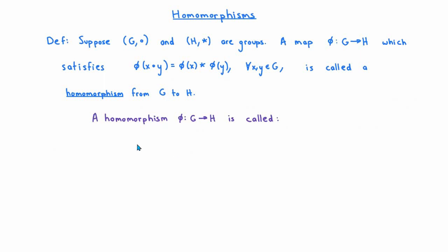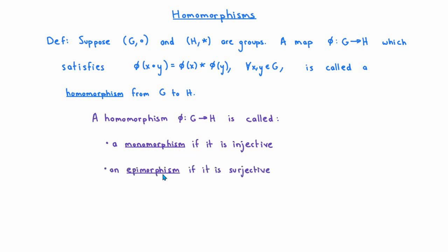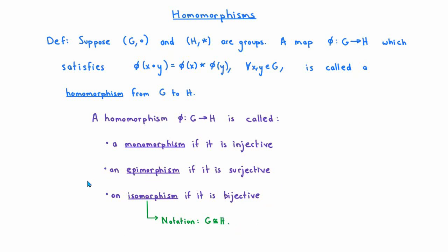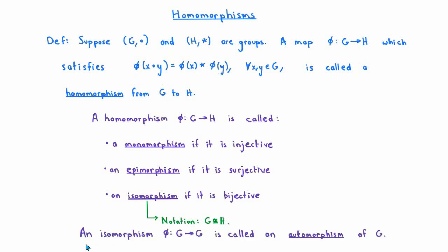There are a bunch of extra properties that a homomorphism phi from G to H may or may not satisfy. First, if phi is a homomorphism which is injective, then we may also call it a monomorphism. If phi is surjective, then we may call it an epimorphism. If phi is both injective and surjective, so that it's bijective, then we call it an isomorphism, and we say that the groups G and H are isomorphic.